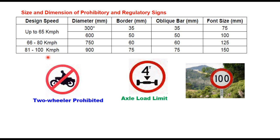The size and dimensions of prohibitory and regulatory signs: prohibitory signs have a diameter, a border, an oblique bar, and a symbol or text — such as a speed limit sign. For a design speed of 65 km/h, the diameter is 300 millimeter, border 35 millimeter, oblique bar 35 millimeter, and font size 75 millimeter. As speed increases, these dimensions also increase. Compulsory or directional control signs are circular with blue background and white border having symbols in white, such as a compulsory right turn sign. For design speed up to 65 km/h, diameter is 300 mm and border is 10 mm; for speed over 120 km/h, diameter is 1500 mm and border is 50 mm.